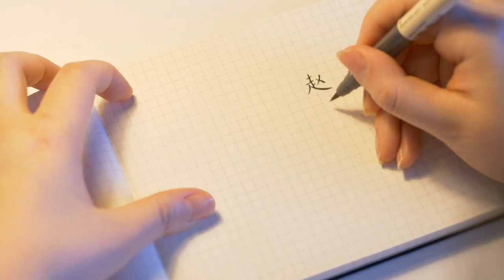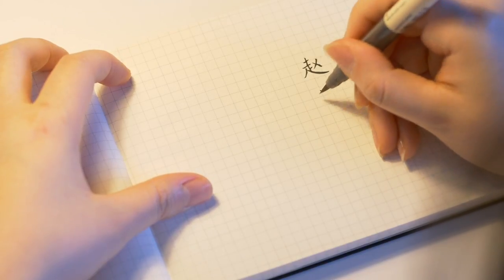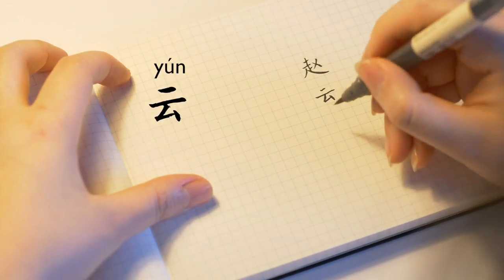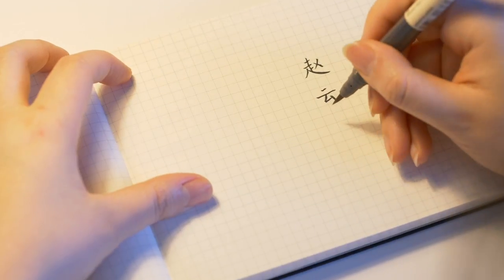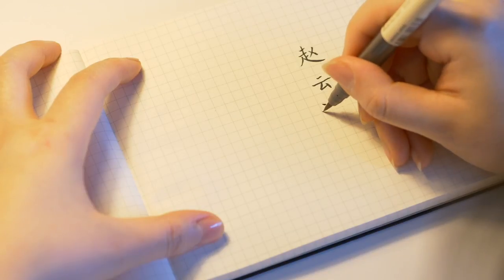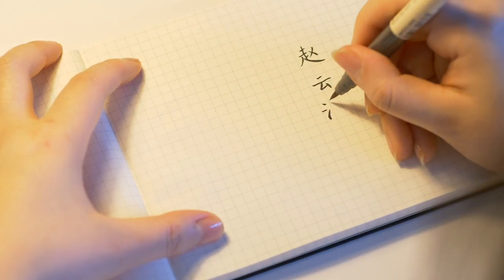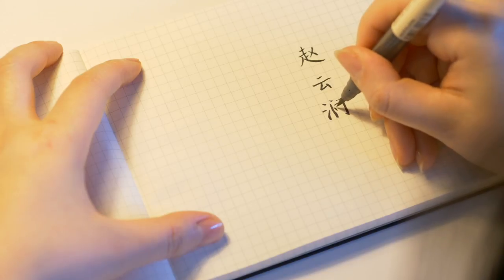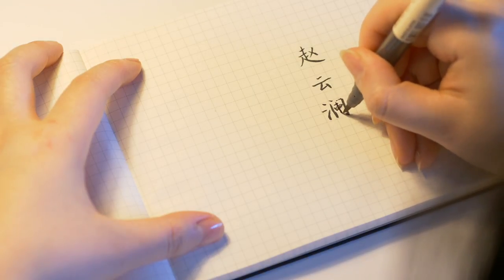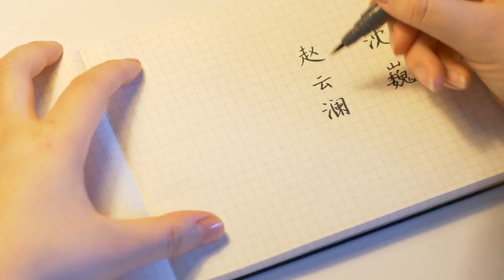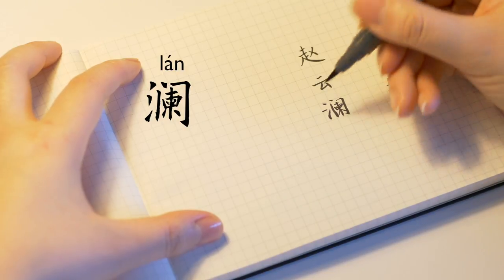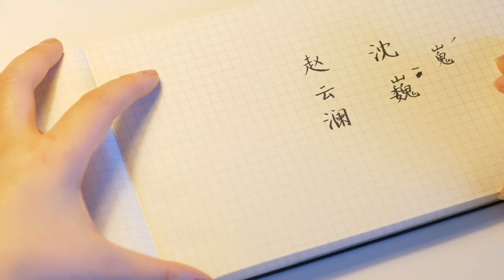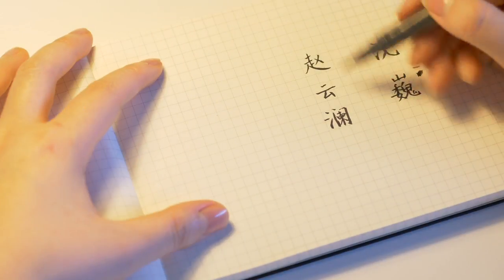The second character Yun in simplified form is also very easy to write. Cloud. Then the third character, also in simplified Chinese, three dot of water. The third character now, this character is pretty complicated. Zhao Yun Lan. Lan means the waves of water, the waves on the lake. So his name, you can really think of it as a sea of clouds, that kind of vision. These are the simplified characters.